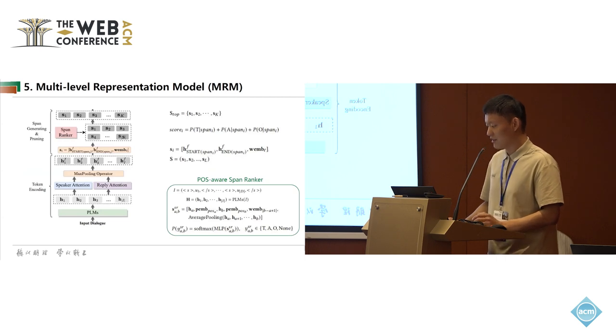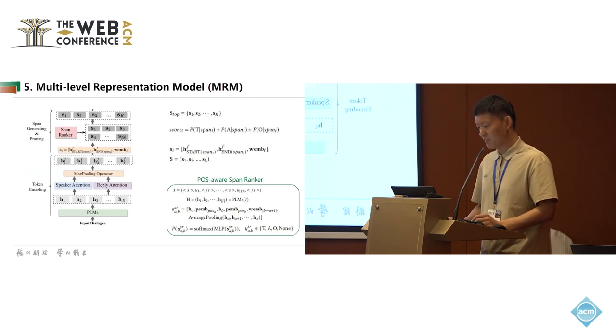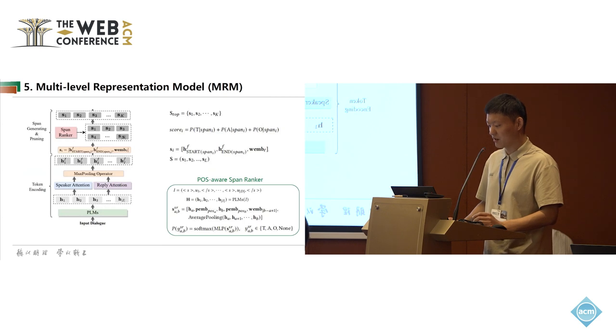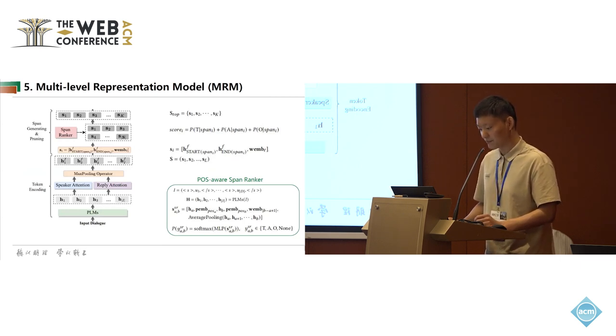At the span generating and pruning stage, we first enumerate all spans to construct the span set S, in which each span consists of one or more tokens. We concatenate the vector representation of the start token, the vector representation of the end token, and the width embeddings to denote the vector representation of span i, namely s_i.